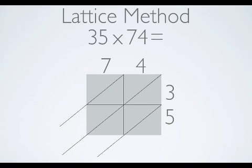Now, we look for intersections of place values. For instance, there's an intersection of 4 times 3 in the top right of our lattice.